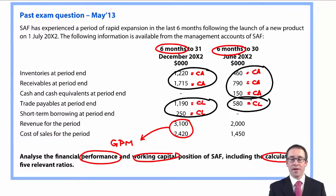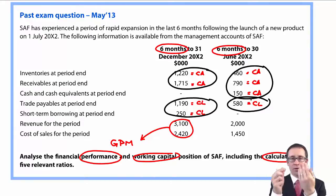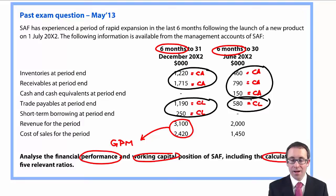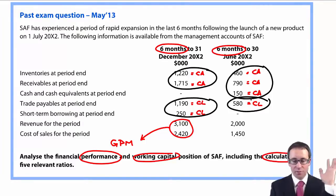By now you should have five ratios: three working capital ratios, gross margin, and your current ratio. If you wanted, you could calculate your quick ratio by removing inventory, but I wouldn't recommend it in the exam — you already have your five.